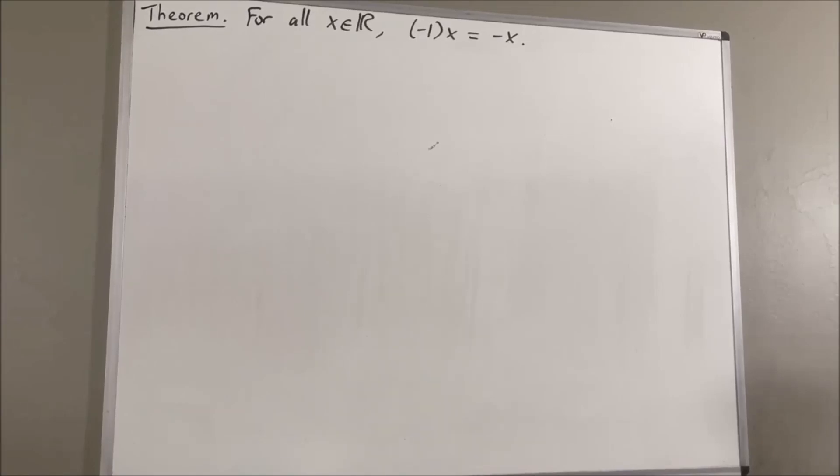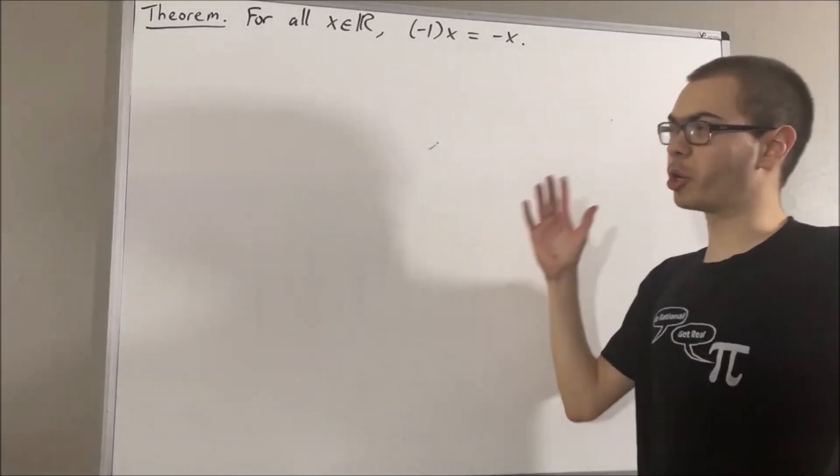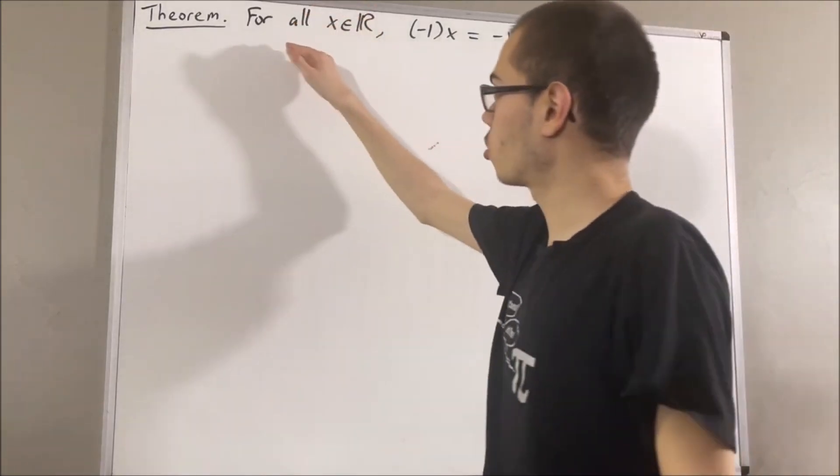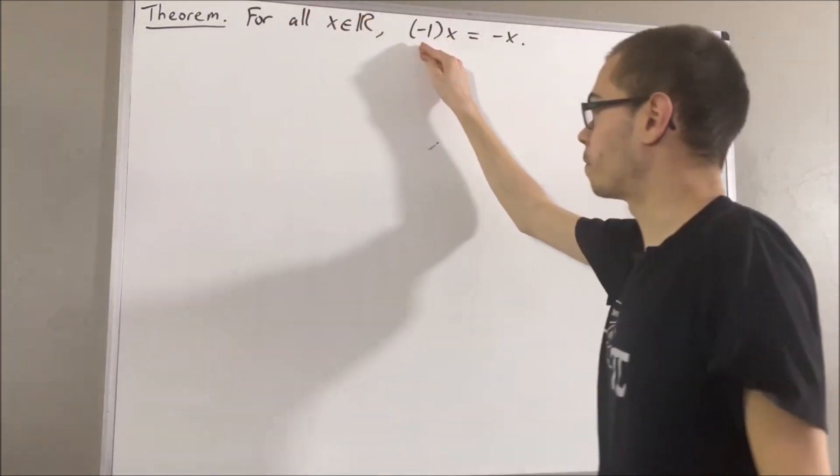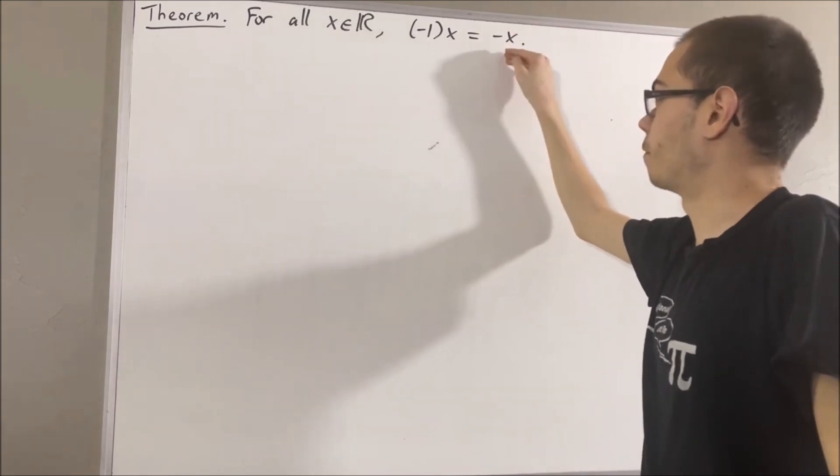Hello! In this video, we are going to prove the following theorem: For all real numbers x, the negative of 1 times x is equal to the negative of x.